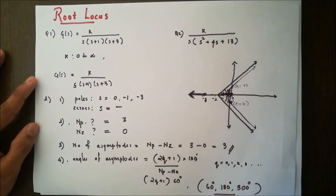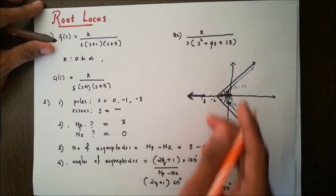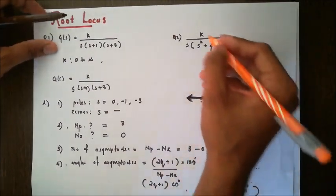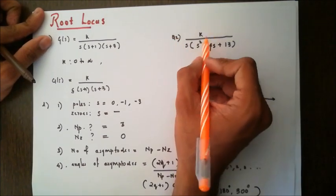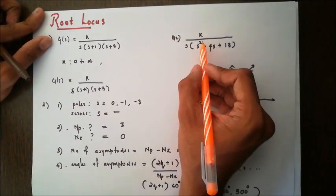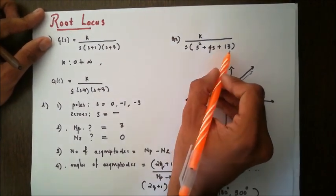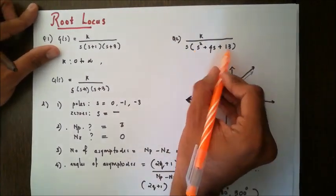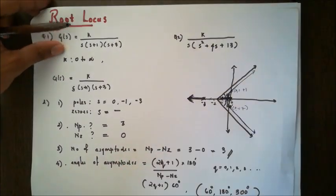Hello everyone, welcome to part 2 of this root locus lecture session. In this video, I am going to find the root locus of the second question that we saw earlier. The open loop transfer function is k divided by s times (s² + 4s + 13), the one with complex poles. So let's get on with it.